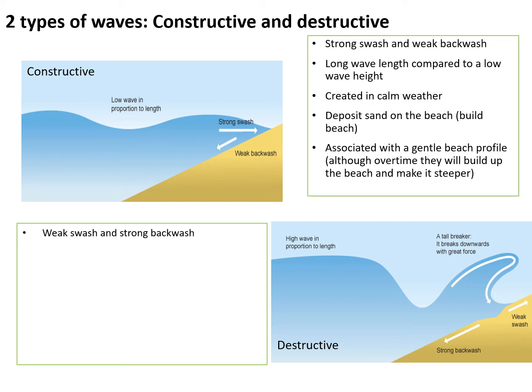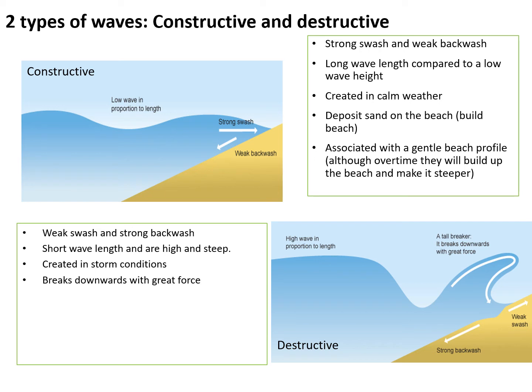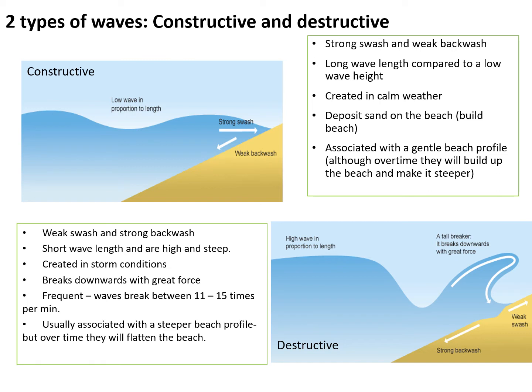The second type of wave is a destructive wave — the name helps us remember what they generally do to coastlines. Here we have the opposite: a weak swash but a strong backwash, which pulls material from the beach back into the sea. These waves have a short wavelength but are high and steep. They are created in storm conditions, break downwards with great force, and are much more frequent than constructive waves. They are associated with a steeper beach profile, but over time will flatten the beach due to their destructive nature.